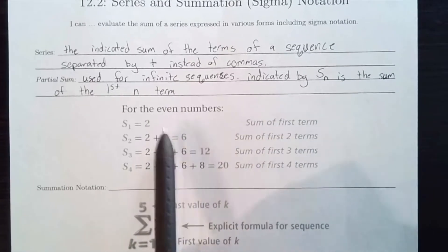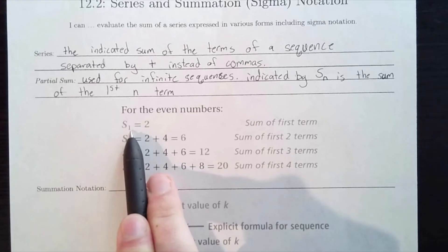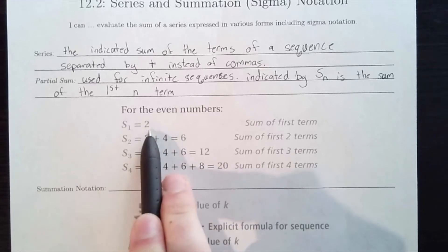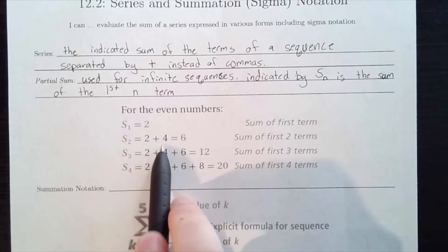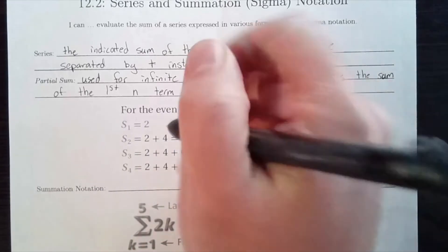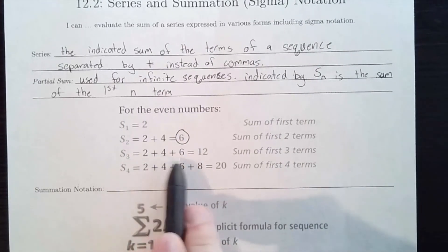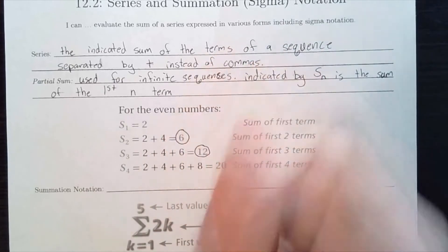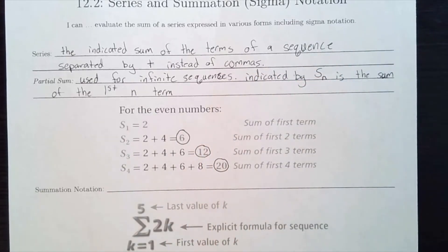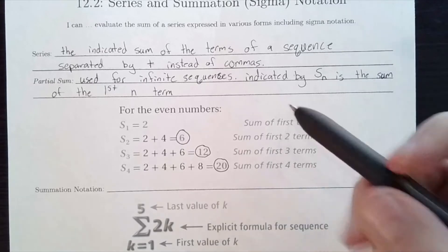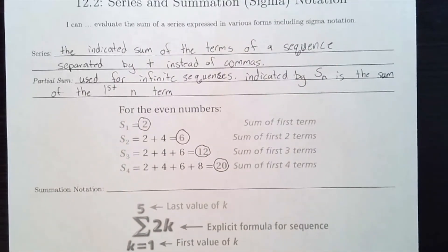Here are some examples using the even numbers. S sub 1 is just the first partial sum — the first term — so it's simply 2. S sub 2 takes the first two terms: 2 and 4, giving a sum of 6. S sub 3 takes the first three terms — 2, 4, 6 — adding to 12. S sub 4 takes the first four terms — 2, 4, 6, 8 — giving a total of 20.